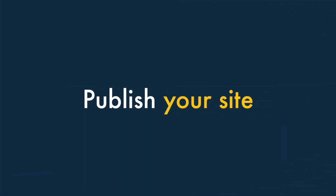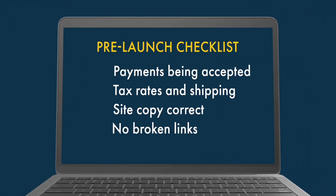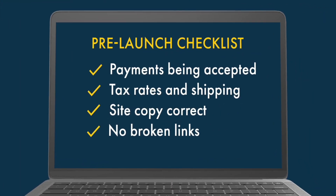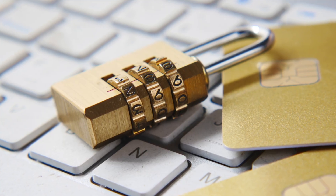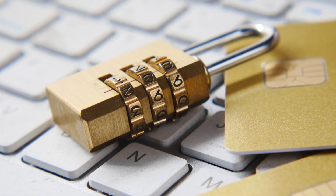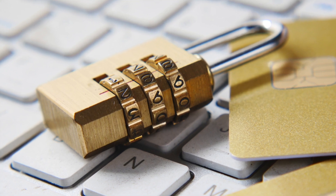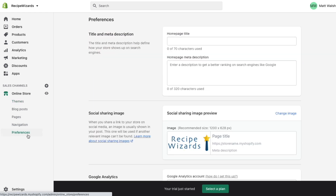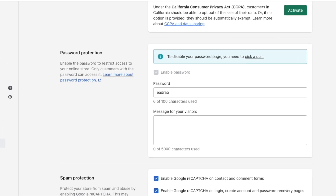Publish your site. When you're done with your pre-launch checks, you can publish your store. By default, each new Shopify store is password protected, and you need to remove this password in order to make your site publicly visible. Just go to Online Store, Preferences, and scroll down to the Password Protection section to do this.